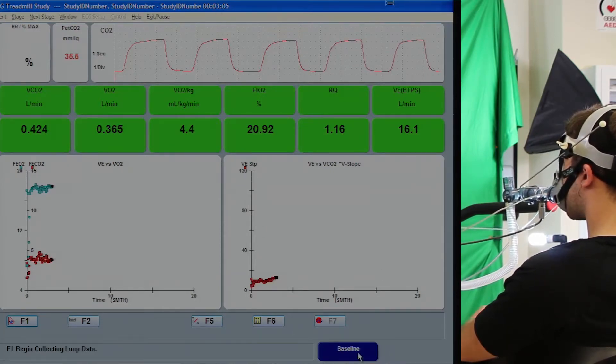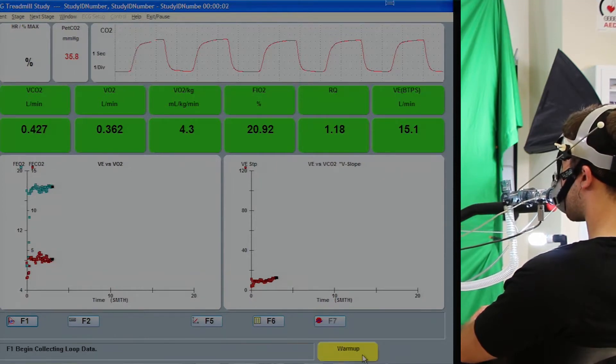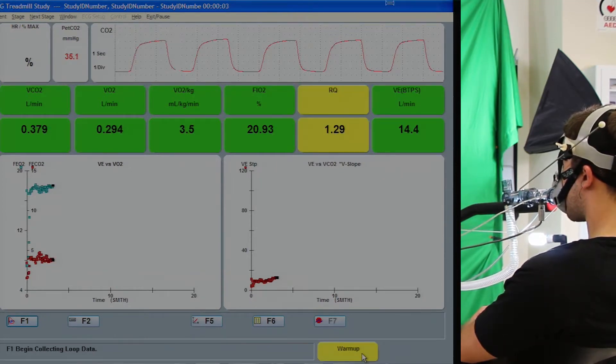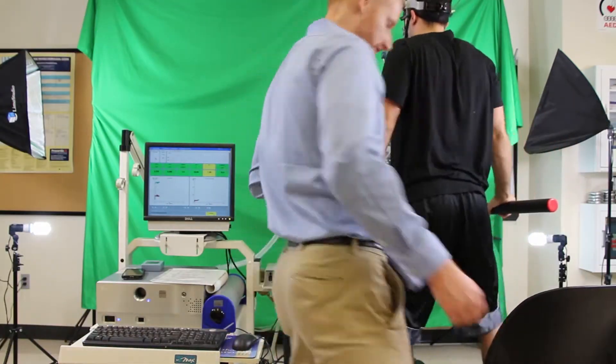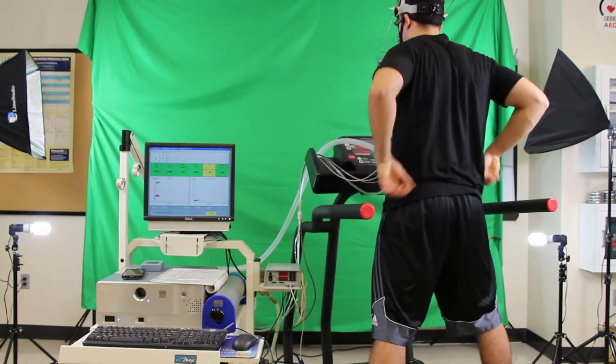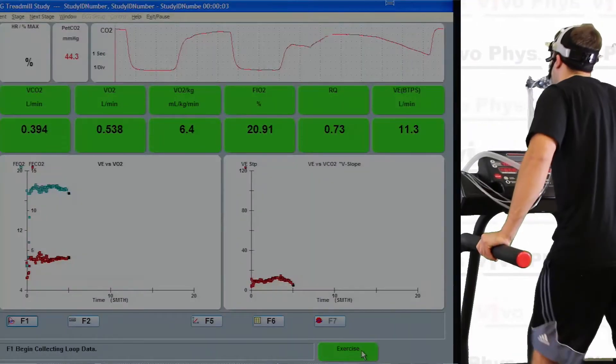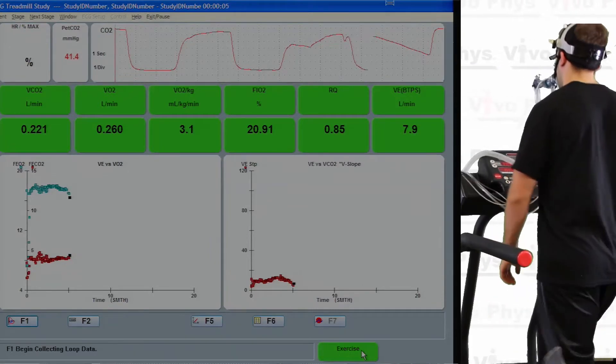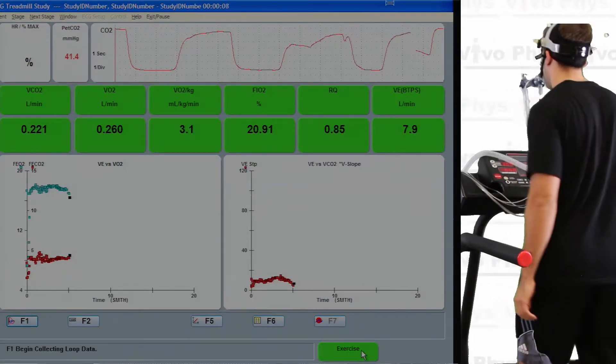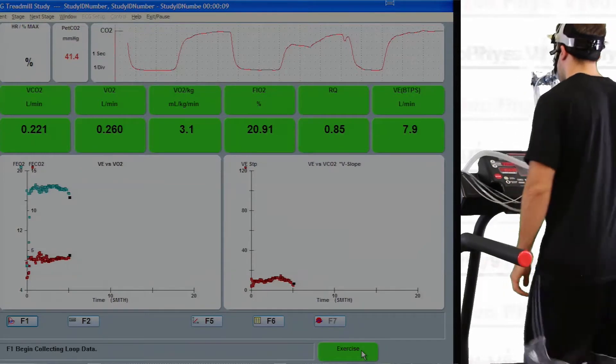Once you've recorded your baseline measurements, click back on that button at the bottom right hand side of the screen and it's going to say warm up. At that point, have the person stand up, remove the chair from the treadmill, and have them get the treadmill up to speed and up to the grade you want. Have them start to walk on that treadmill and then hit that button in the bottom right hand corner again. It's going to say exercise and that's going to be the actual start of the test.